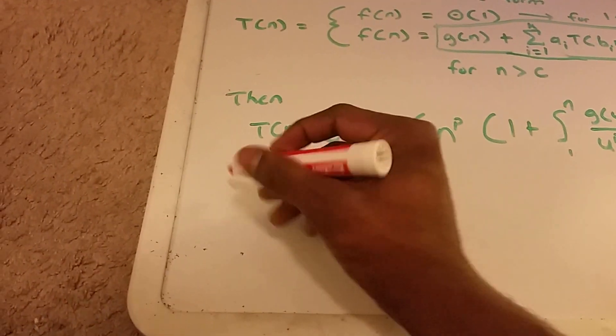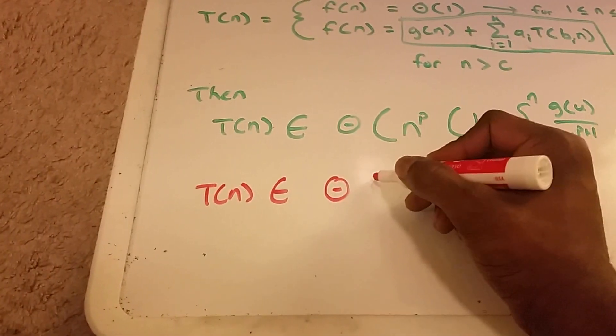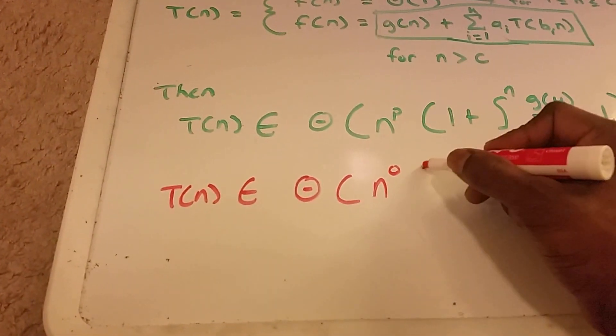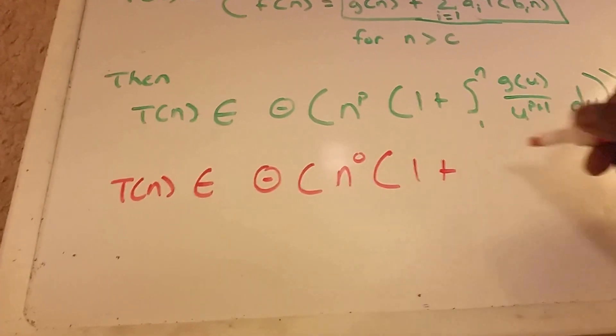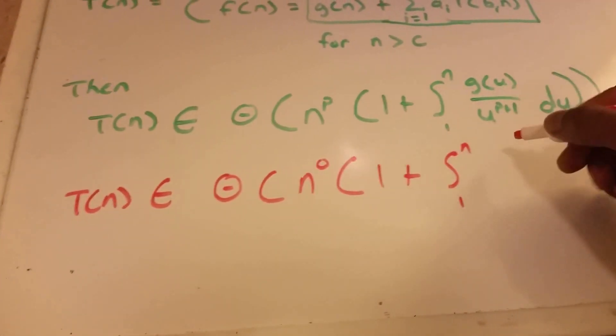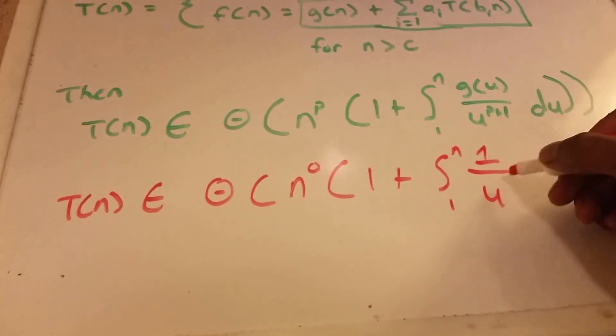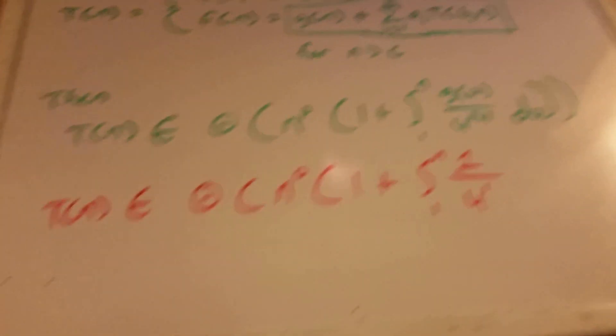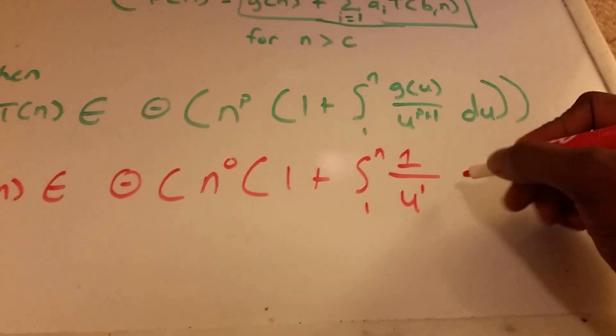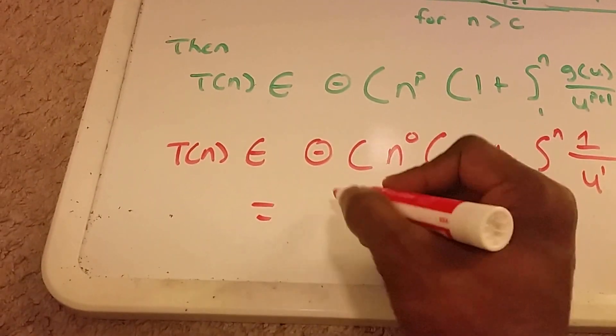So now we know our p equals 0. So what we have is our T of n belongs to theta of n to the p. Our p was 0 and not 1 times 1 plus integral from 1 to n. Our g of u was 1. So we have 1 over u to the 1 because our p equals 0 du. So let's simplify this a little bit.